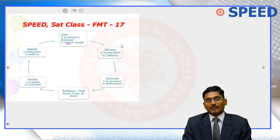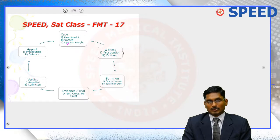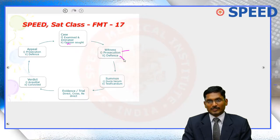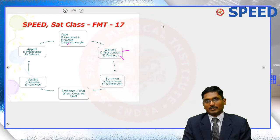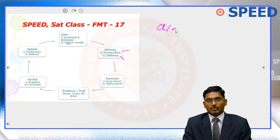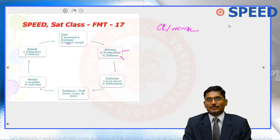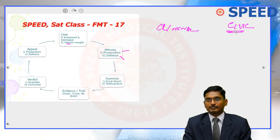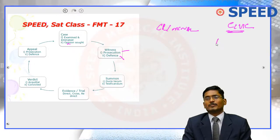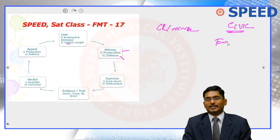Now, we have to know two key parties: the prosecution and the defense. To understand these, there are two kinds of justice systems. One is criminal justice and the other is civil justice. Civil justice is a dispute between two parties.